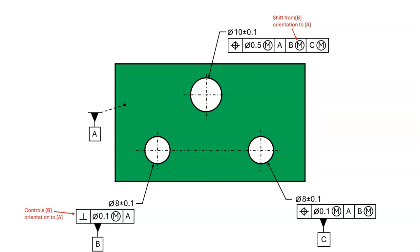Therefore, when we calculate shift at B, we must include the orientation tolerance between B and A in the calculation. We look at datum feature B and we see that the orientation relative to A is controlled by a perpendicularity tolerance. We will need to include this perpendicularity tolerance in our shift calculation.